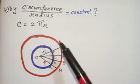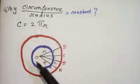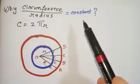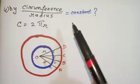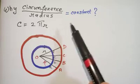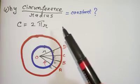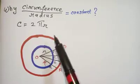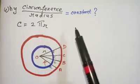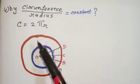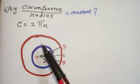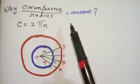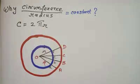We know that however bigger the circle would be, circumference upon radius is always constant. Through my research what I have found is that very few books or concept videos give you a definitive reason for why circumference upon radius is a constant — meaning that whatever be the size of the circle, as it grows bigger and bigger, circumference divided by radius would always be a constant.